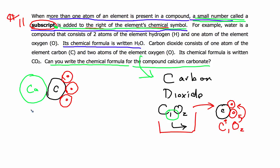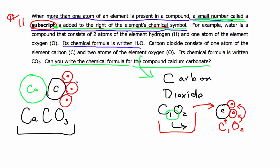Welcome back. So calcium carbonate is written: Ca for calcium, C for carbon with a subscript of 1, and then O3. This is the chemical formula for calcium carbonate, and this is what the atoms in the molecule would look like. Since there's only one atom of calcium, I'll put a little 1 there. Since there's only one atom of carbon, I'll put a little 1 there so every element has a subscript. You must write the 3 for oxygen, or I wouldn't know there are three oxygen atoms in this molecule.